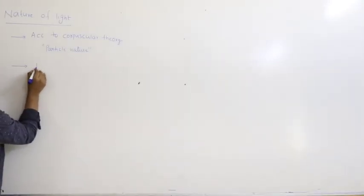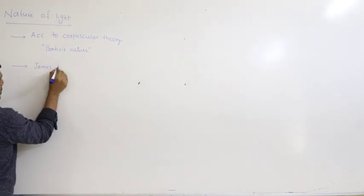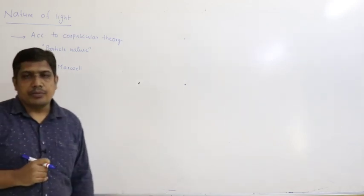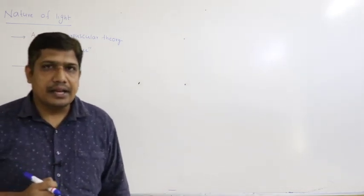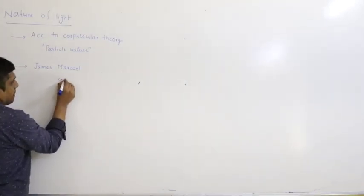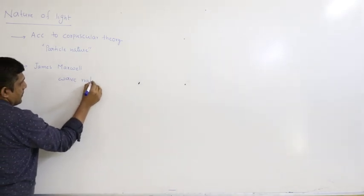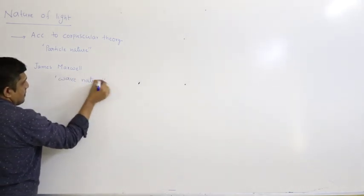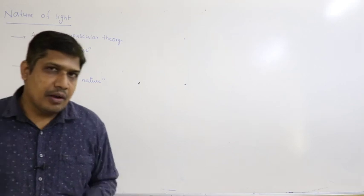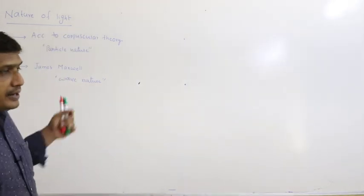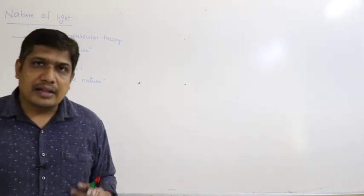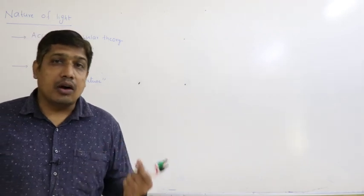Later, James Maxwell proposed that radiations like light possess wave nature. That means light travels in the form of waves, not as particles. The wave nature was able to explain some other properties of light, but again not all properties.